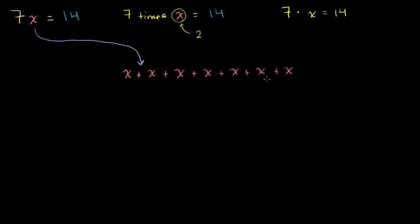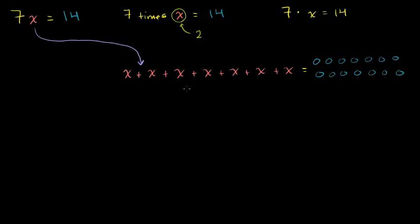This equation tells us that 7x is equal to 14. So let me just draw 14 objects here: 1, 2, 3, 4, 5, 6, 7, 8, 9, 10, 11, 12, 13, 14. So we're literally saying 7x is equal to 14 things. These are equivalent statements.